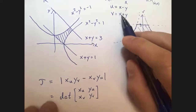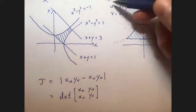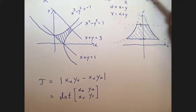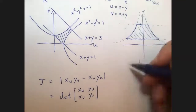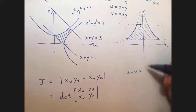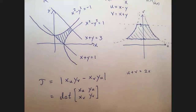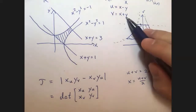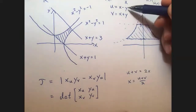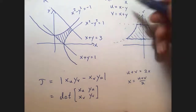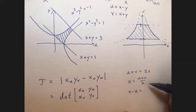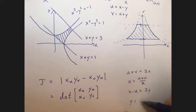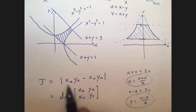To solve the system, I add the two equations together: u plus v equals 2x, so x equals (u plus v) over 2. Then subtracting the first equation from the second gives v minus u equals 2y, so y equals (v minus u) over 2.